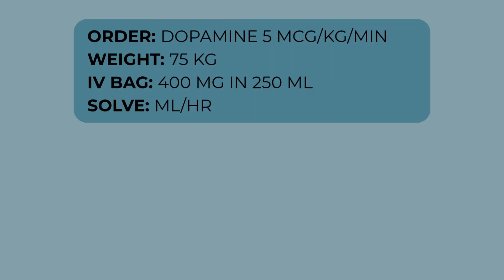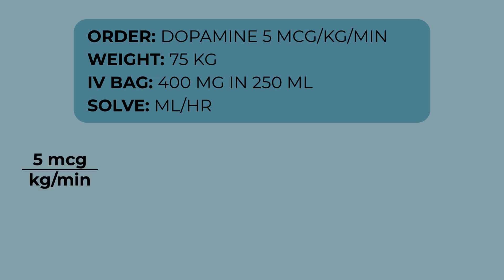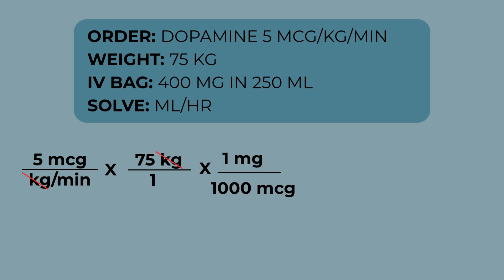Let's set this up and solve. The order is for 5 micrograms per kilogram per minute and the patient weighs 75 kilograms. Start with 5 micrograms over kilograms per minute times 75 kilograms, then cancel out the kilograms. Now we're going to convert micrograms to milligrams — put 1 milligram over 1,000 micrograms and cancel out the micrograms.